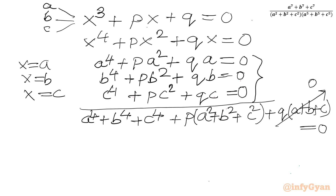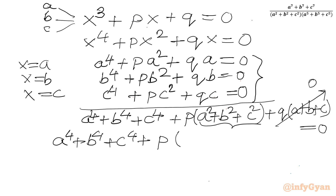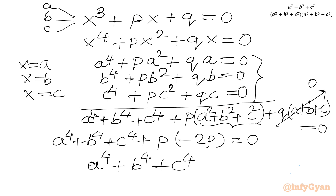Now, A squared plus B squared plus C squared equals minus 2P, and A plus B plus C equals 0. Substituting: A to the fourth plus B to the fourth plus C to the fourth plus P times minus 2P equals 0. The conclusion is that A to the fourth plus B to the fourth plus C to the fourth equals 2P squared.